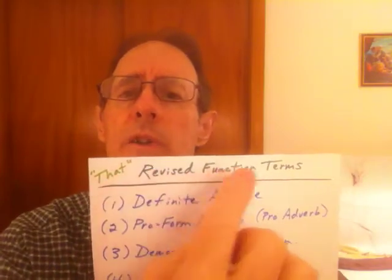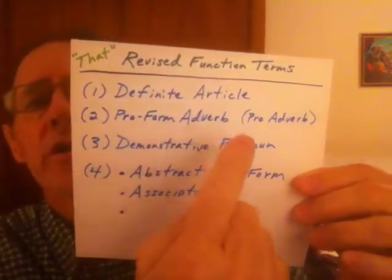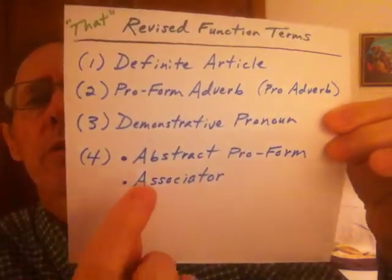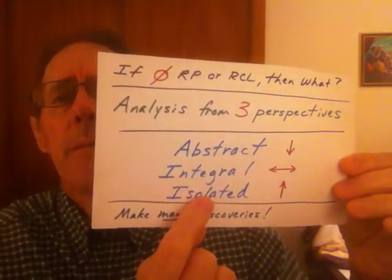And that's all it does — it's not a genuine, really solid pronoun. It's kind of pronominal, but it's not really spot on. So we have the word "that" and my revised function terms — the functions are the same as in traditional grammar, I just renamed them: definite article, proform adverb or pro-adverb, demonstrative pronoun, and now for the fourth grammatical function, we have two terms to choose from — abstract proform and associator. In the next video we're going to look at the word "that" from the isolated perspective, find another term, work it out, and see which one would be the best to choose as our final term.